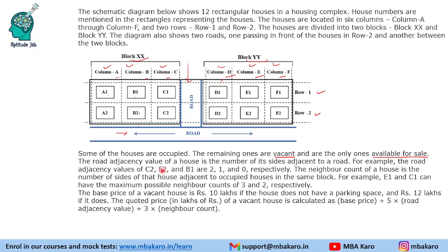F2 has a road adjacency value of 1 — there is only one road in front of it. B1 has a road adjacency value of 0, as there is no road adjacent to B1. So the neighbor count — there are 2 terms: road adjacency and neighbor count.